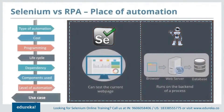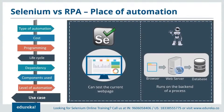Now let's talk about the use case of automation, or where does the automation take place. Selenium works on the front end of the process, whereas RPA works on the back end. Selenium can test only the current web page, whereas RPA deals with processes that are time-consuming. The browser details are sent via the web server and stored in a sequence onto the database.